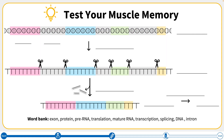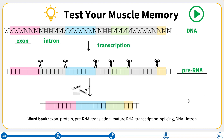That was a lot of information. To test your muscle memory of the process moving from DNA to protein, pause the video here and try to fill in the blanks. Remember that we start with DNA, which is made up of exons and introns. DNA undergoes transcription to produce pre-RNA. The introns are then removed from the pre-RNA during splicing in order to produce the mature RNA, which can then be translated into a protein.